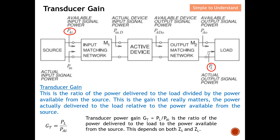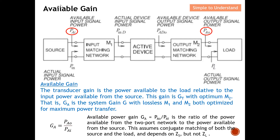Available gain is the actual output power versus PAi. The transduction gain GT with optimized M2 becomes GA — the available gain. GA is the system gain G with lossless M1 and M2, both optimized for maximum power transfer. We remove any losses from M1 and M2, and this is what we call the available gain.